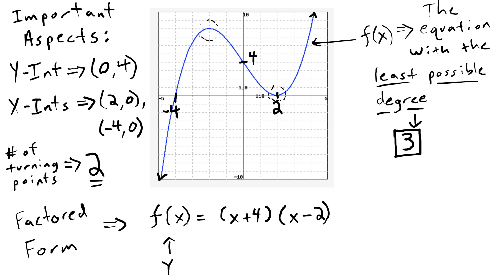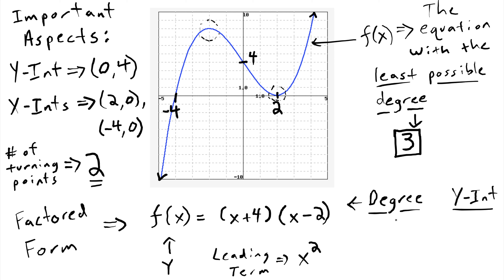So we are partially there — we have the right factors, and there are no other x-intercepts of this function. But there are a few problems. One is the degree, and the second is where the y-intercept would be. The degree is the highest power of your polynomial. Currently the way this is written, the leading term would end up being x squared, so the degree of this polynomial would be two. And that's not what we want — we want the degree to be three.